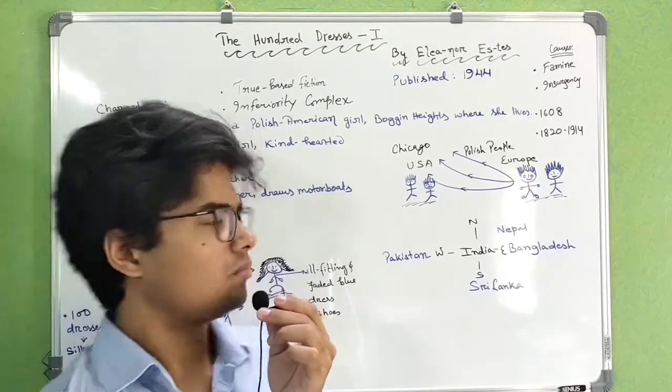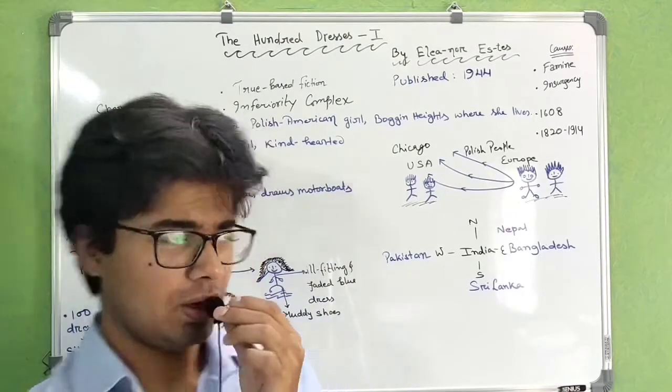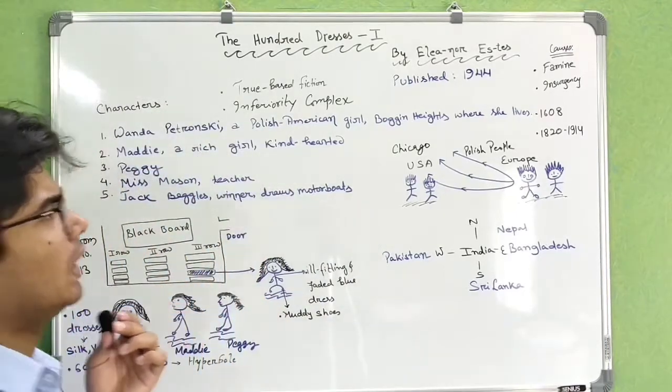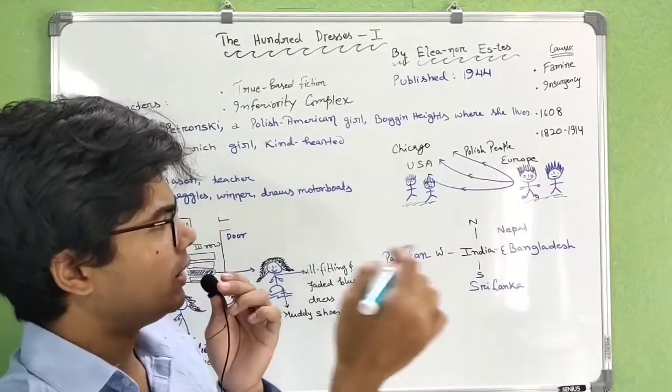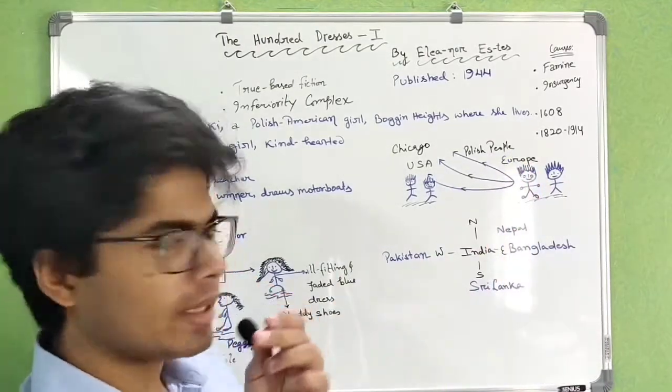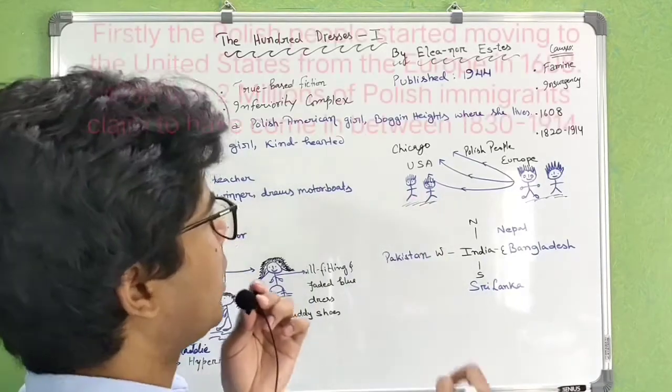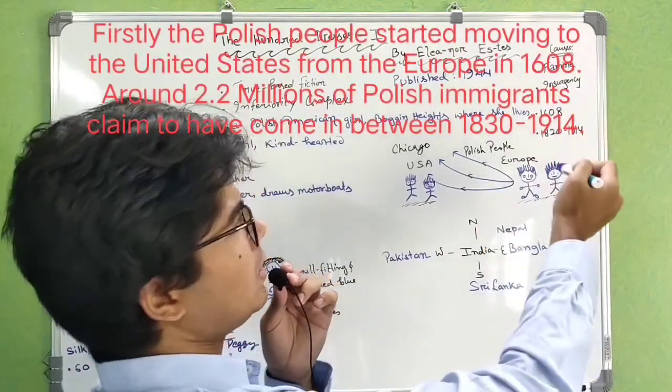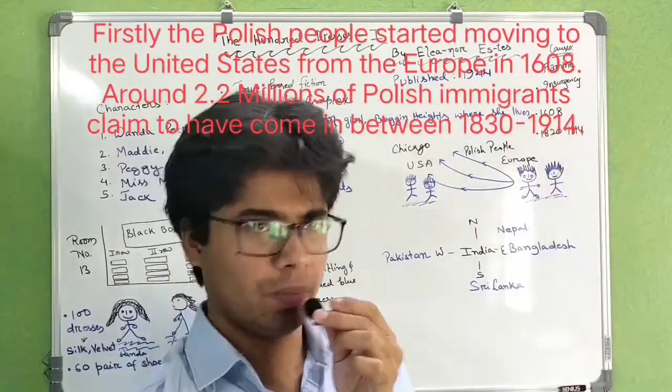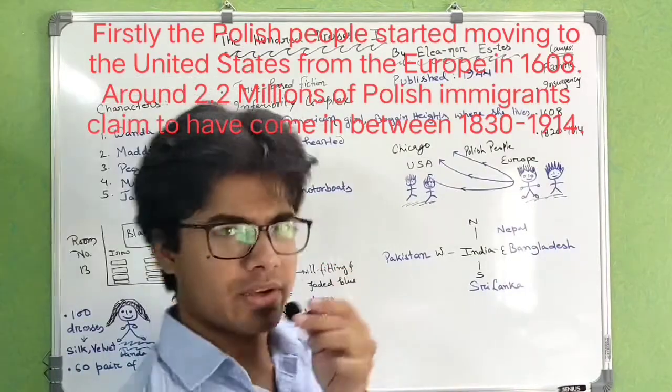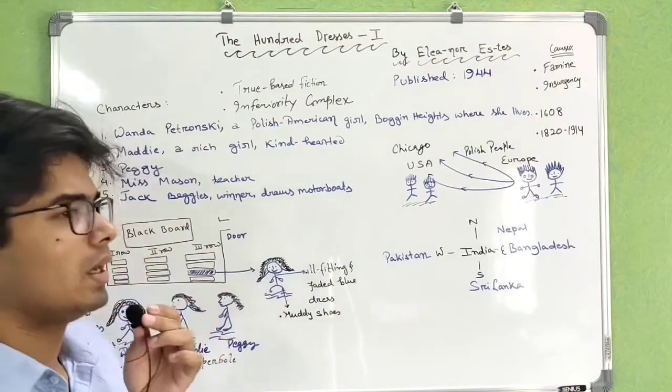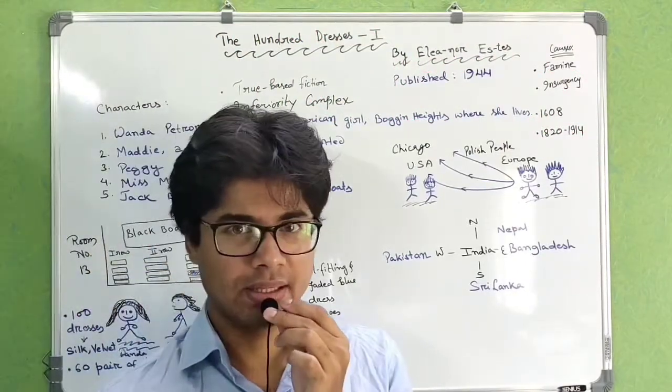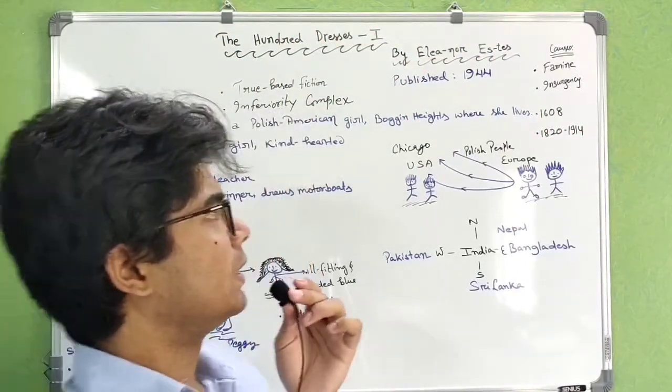Boggin Heights is where most of the Polish people or lower-class people used to live. Polish people started leaving Europe and settling in the U.S. because there was famine and insurgency—starvation and riots against the government.